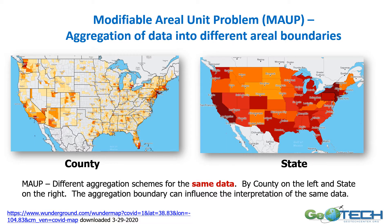This is an example of the modifiable areal unit problem — aggregating data to different types of areal boundaries or extents. On the left, we have data by county; on the right, they are aggregated into states. The map on the left clearly shows the center of the United States is having many fewer confirmed cases, whereas the map on the right doesn't show this as clearly. We do see California, New York, and New Jersey as dark in both instances, but with the county map we can really see, for example in Washington state, that cases were confined to several counties on the west-northwest.